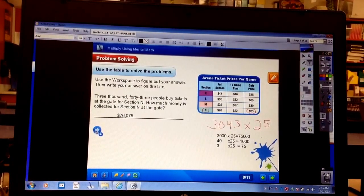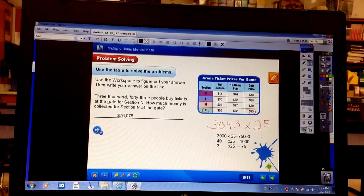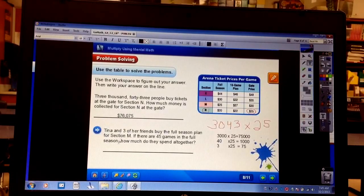I'm going to let you with the teacher do the rest of them. Three friends buy three full season plans for section M. So, make sure you find section M, full season. If there are 45 games, how much do they spend all together? So, you're going to take 25 times 45. Good luck. And, that will be the end of this lesson.